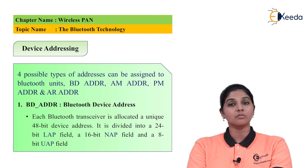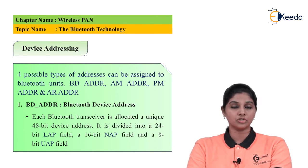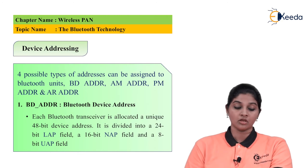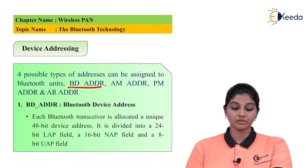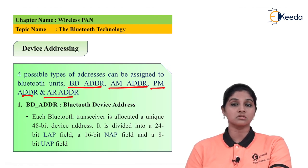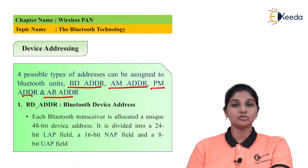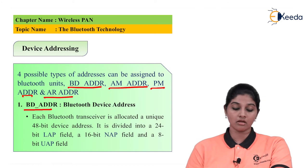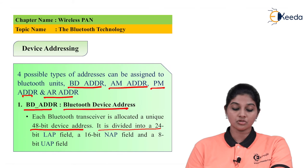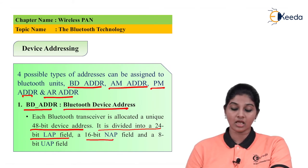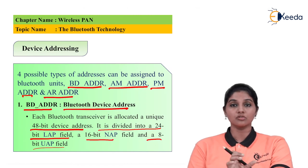Device addressing plays an important role in Bluetooth since many devices can be connected wirelessly. There are four possible ways to address a Bluetooth device: BD_ADDR, AM_ADDR, PM_ADDR, and AR_ADDR. The Bluetooth Device Address (BD_ADDR) is a unique 48-bit address for each Bluetooth transceiver, divided into a 24-bit LAP field, a 16-bit NAP field, and an 8-bit UAP field.